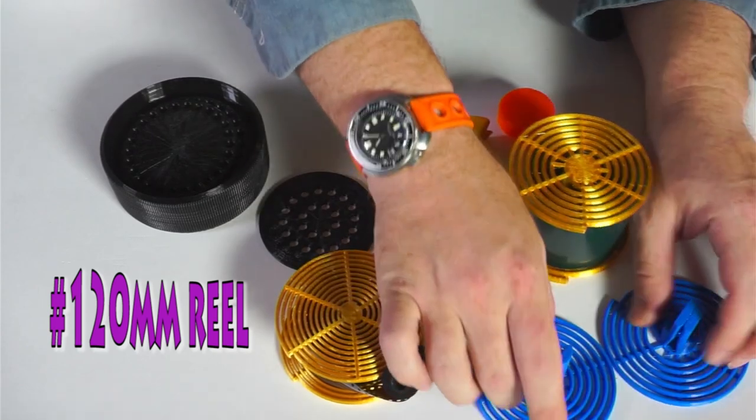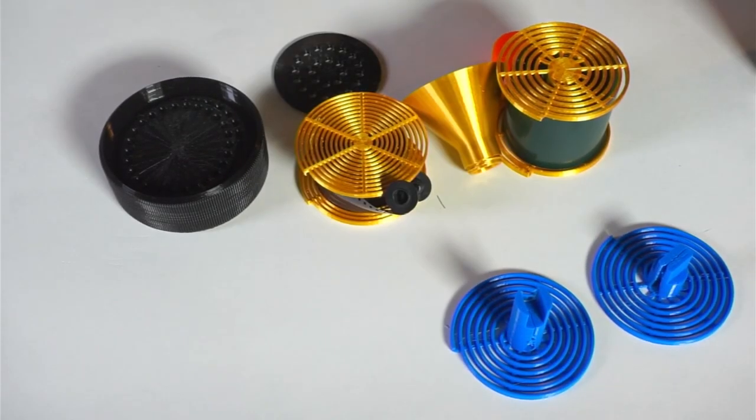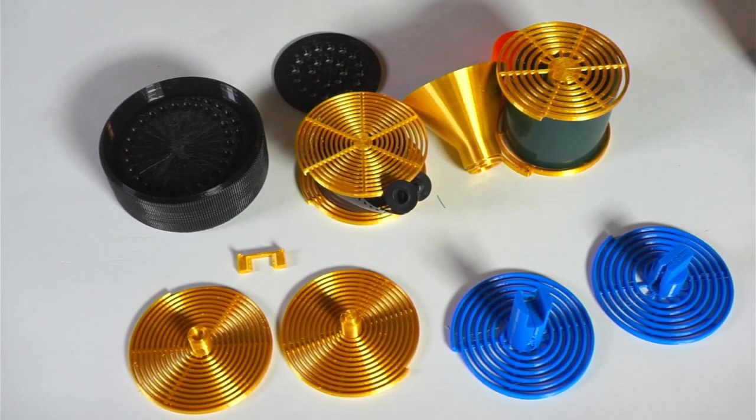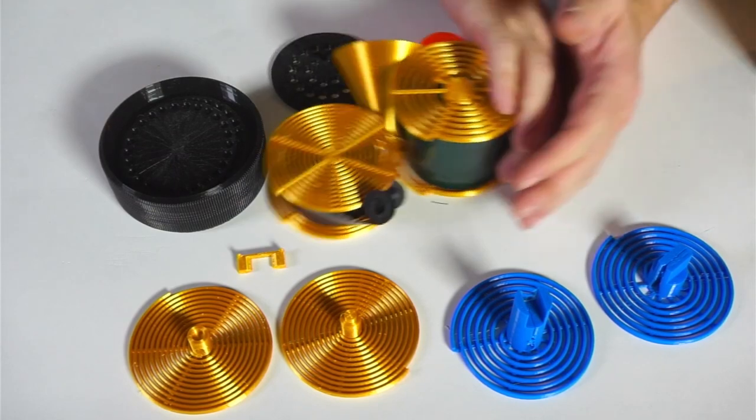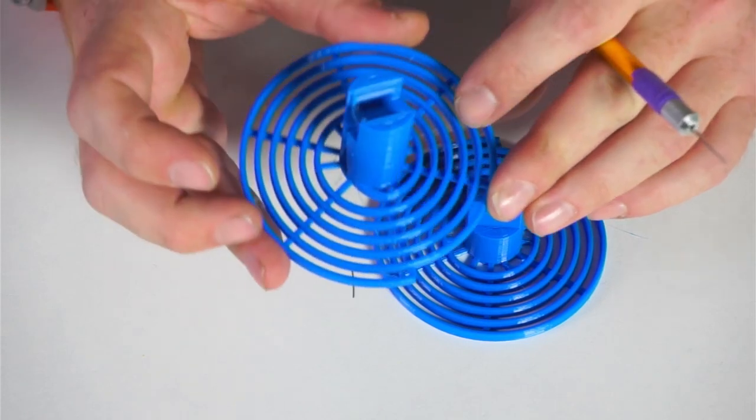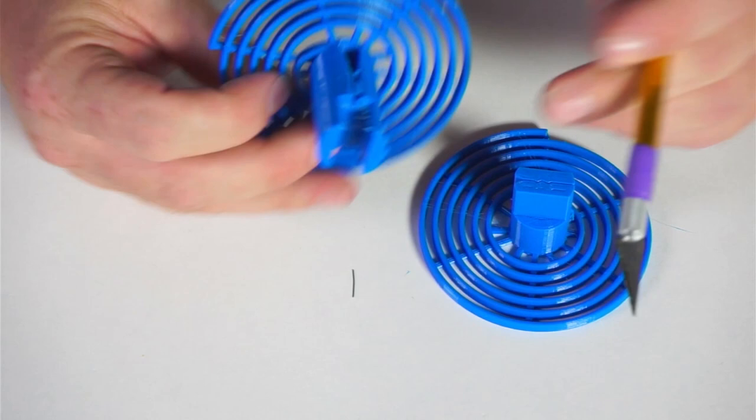The 120mm reel is made up of these two parts. And the 35mm reels are made up of two halves and a clip. So let's put those together. We'll start with the 120mm reel. The 120mm reel might come off the printer with a little bit of stringing. It's important you clean that up in here.